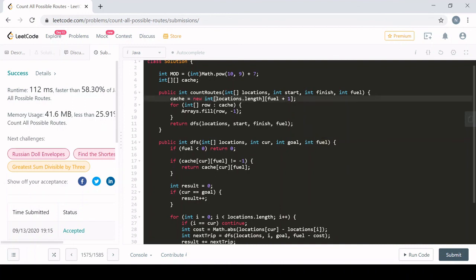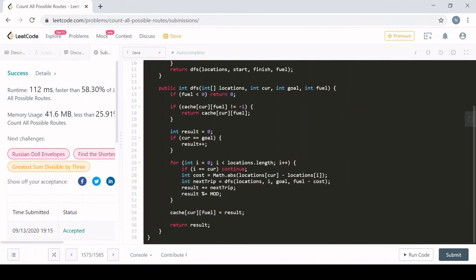And it's locations.length, because if locations.length, say, is 10, then I have 10 possible cities to go into. And then fuel plus one, because I have however much fuel they give me, but I also have the zero state, so I add one to include that zero state. Let's talk about the time complexity real quick. For time, and let's do the space first, I actually think I want to do the space first.